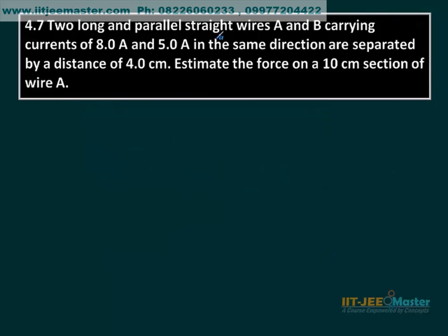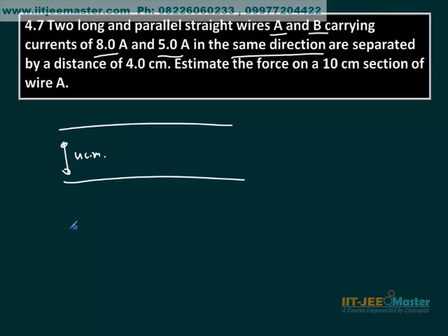4.7. Two long and parallel straight wires A and B carrying currents of 8 and 5 ampere in the same direction, separated by 4 cm. Estimate the force on a 10 cm section of wire A.